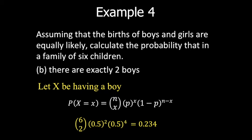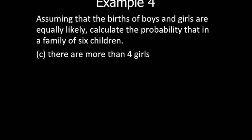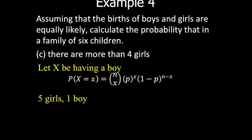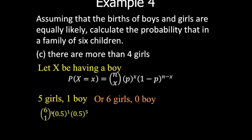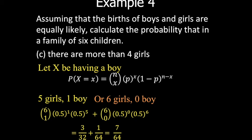For part (c), more than four girls: this means five girls and one boy (x=1), or six girls and zero boys (x=0). For x=1: P = C(6,1) × (0.5)^1 × (0.5)^5. For x=0: P = C(6,0) × (0.5)^0 × (0.5)^6. The sum of both probabilities gives 7/64.